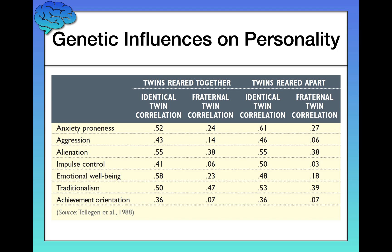There's a lot of data here, so I'm going to walk you through it and draw on the screen at the same time. First, let's focus on this column — a bunch of different personality aspects they measured. We're looking at twins reared together and twins reared apart, and for each group, identical and fraternal twins. What you're seeing in the columns are correlations: to what extent do twins match up along these personality dimensions? If one twin is aggressive, is the other likely to be aggressive as well?